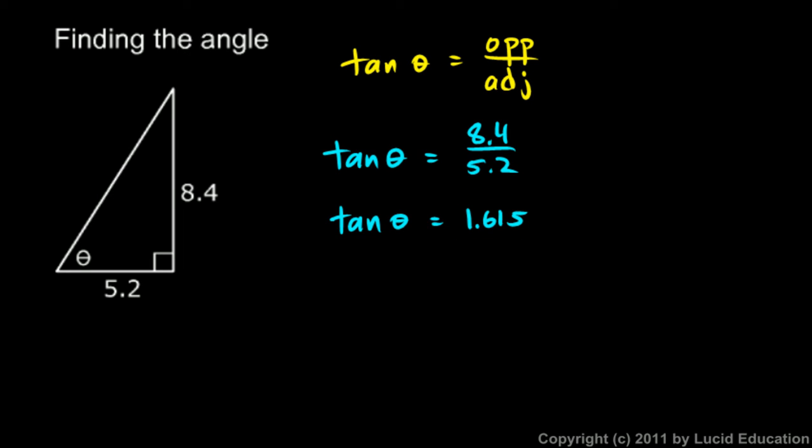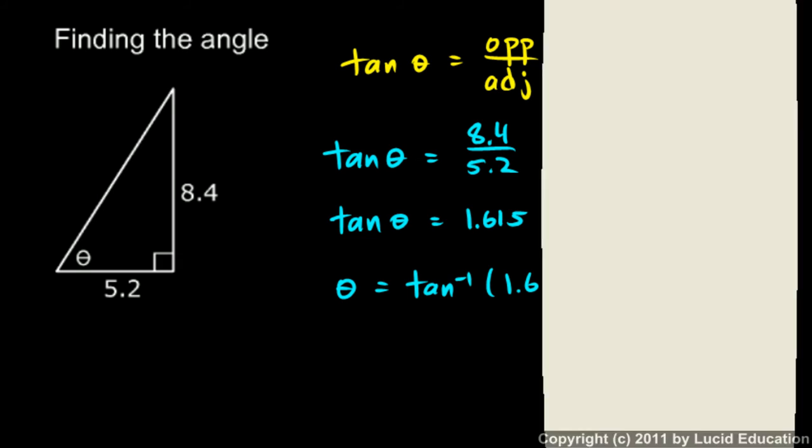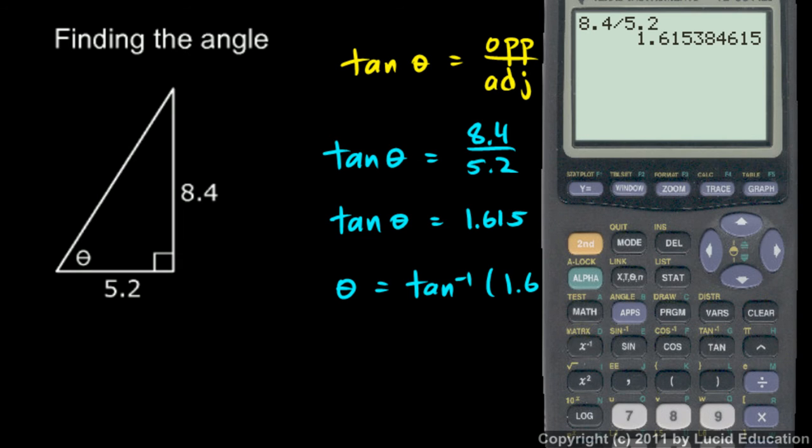Now we're not going to take the tangent of this—I'm saying the tangent of theta, the tangent of that angle in degrees, is that. So if the tangent of theta is 1.615, then theta is equal to the inverse tangent of 1.615.